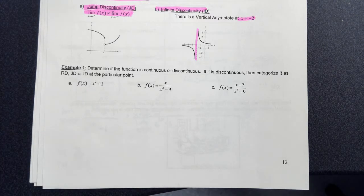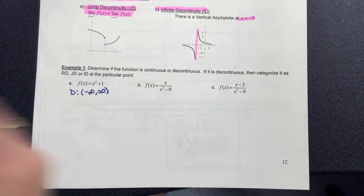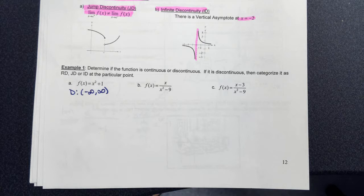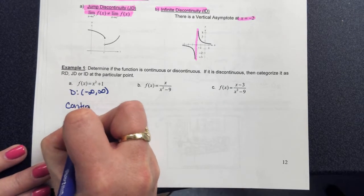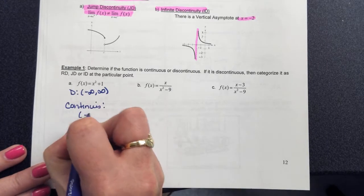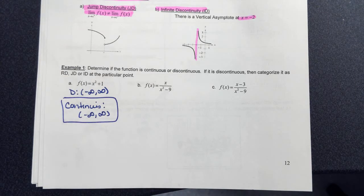Let's look at f(x) = x² + 1. There's a direct connection between domain and continuity. The domain of x² + 1 is all real numbers. There are no holes, no asymptotes, no jumps — so if the domain is all real numbers, it's also going to be continuous for all real numbers.